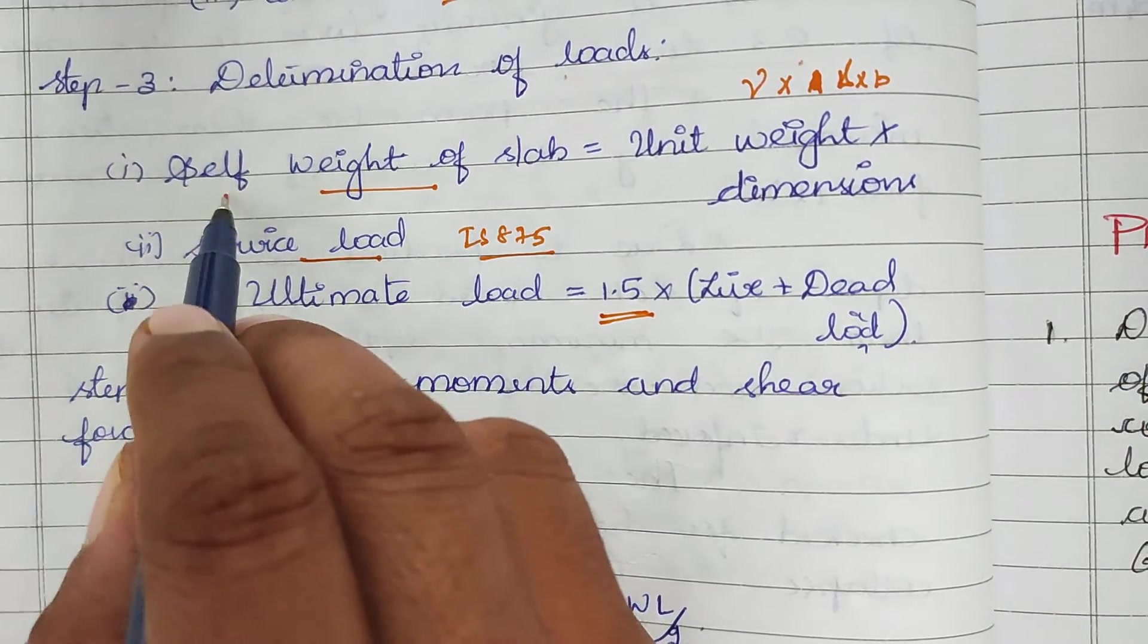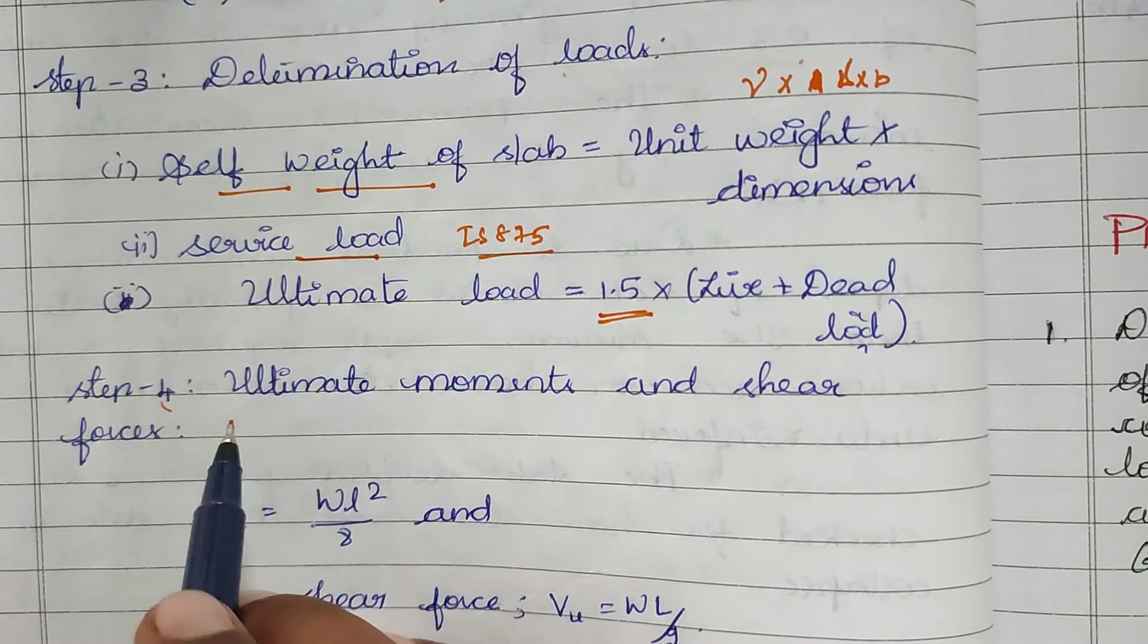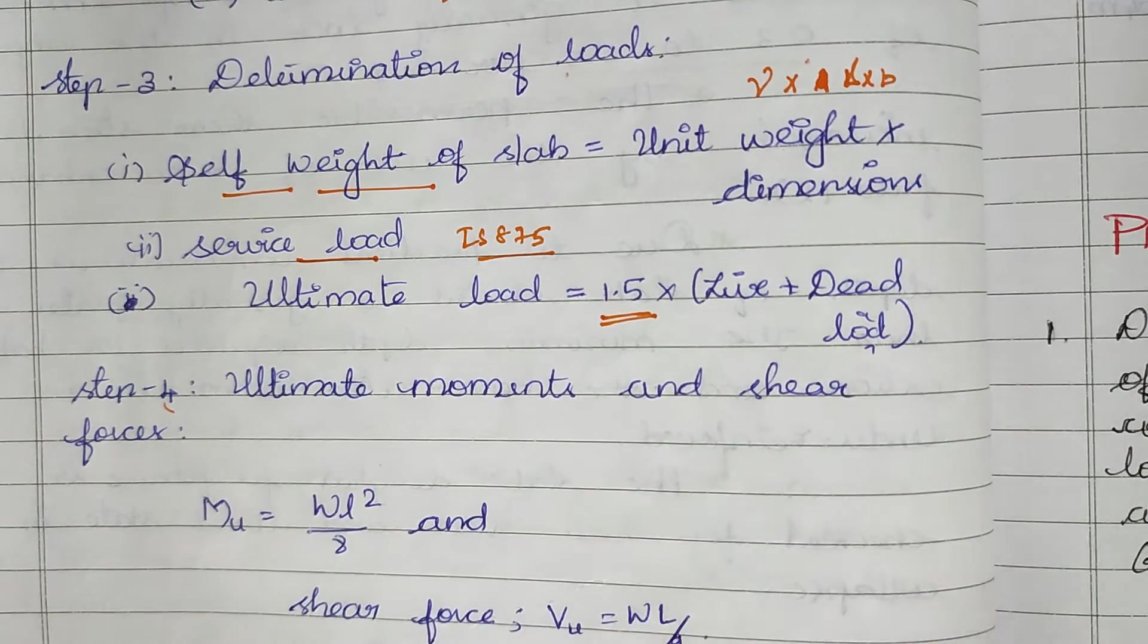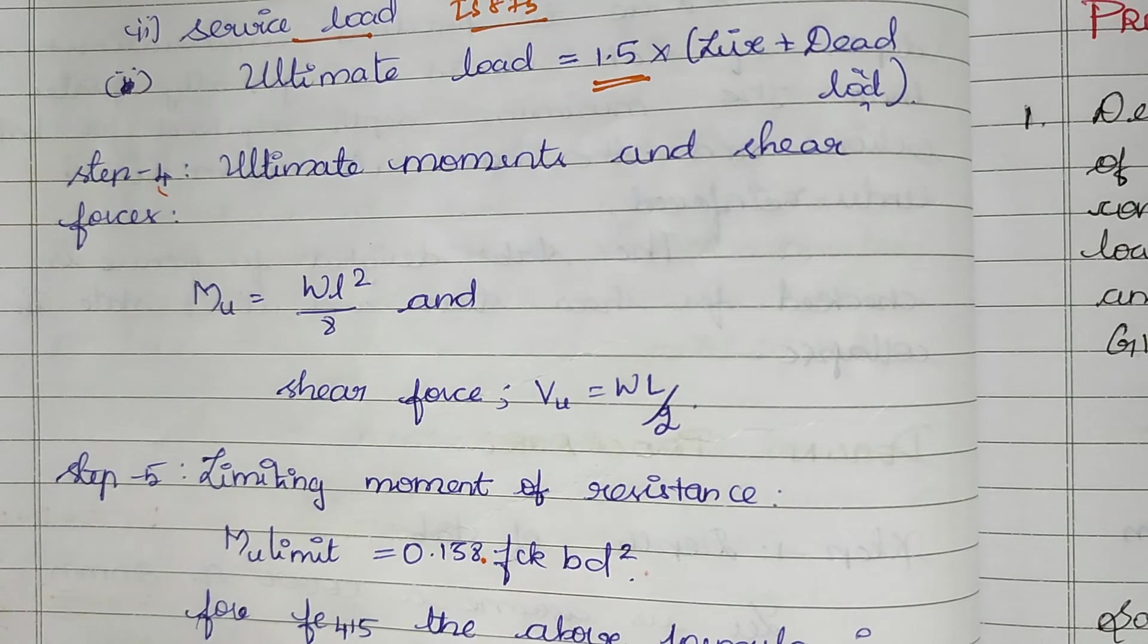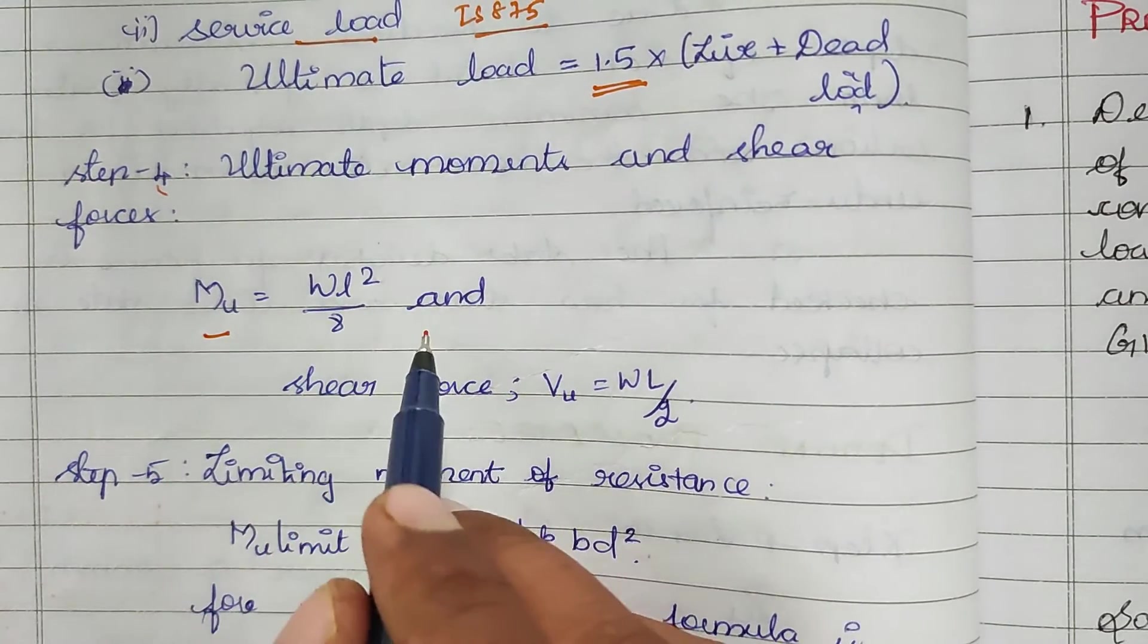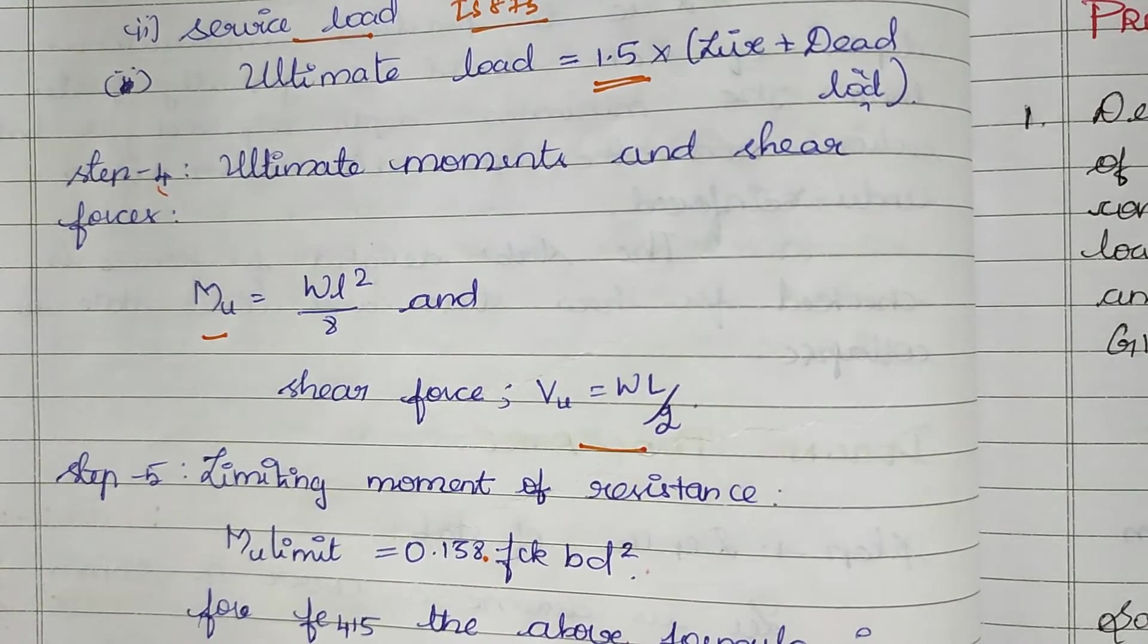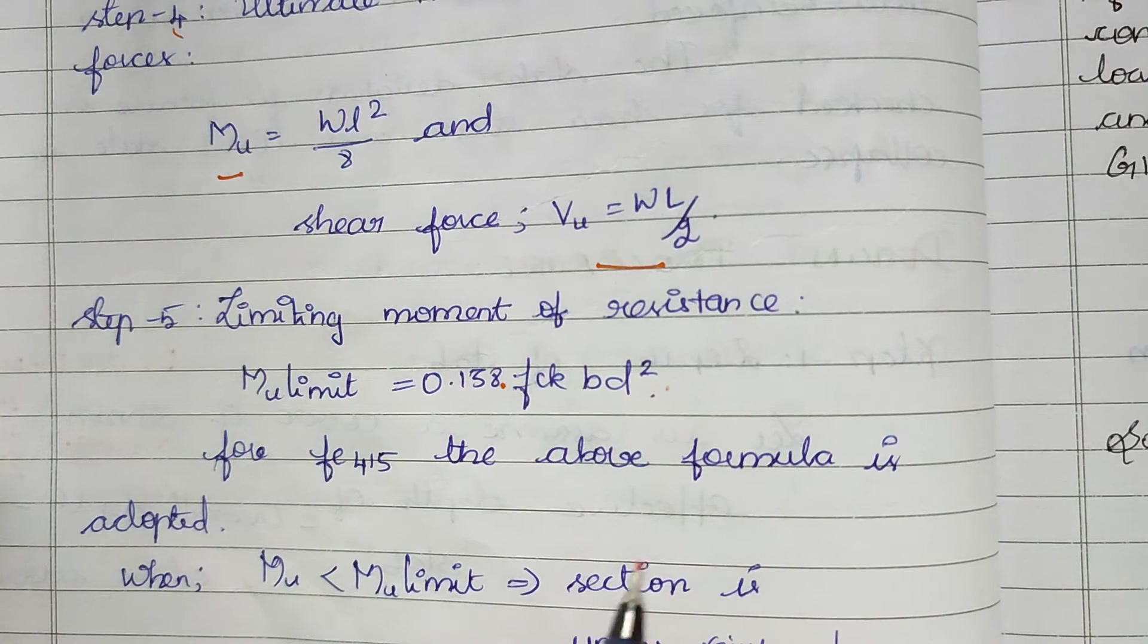Step 4 is ultimate moment and shear force. These are considered as simply supported beams, so ultimate moment Mu equals wL²/8, and shear force Vu equals wL/2. After that, we find the moment of resistance to determine if it's over-reinforced or under-reinforced.